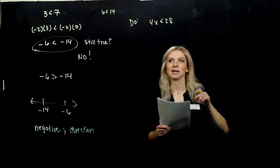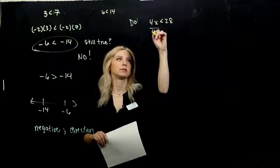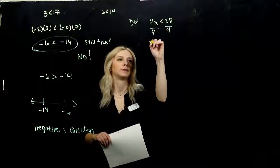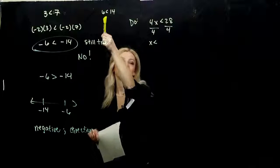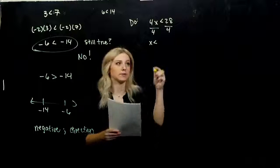So I'm trying to get x on its own. It's attached to a 4 right now, so I need to divide both sides by 4. It's positive, so again, I don't need to change the direction of the sign. 28 divided by 4 gives me 7.